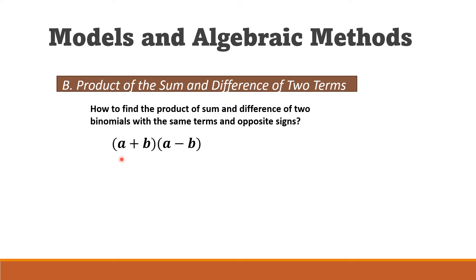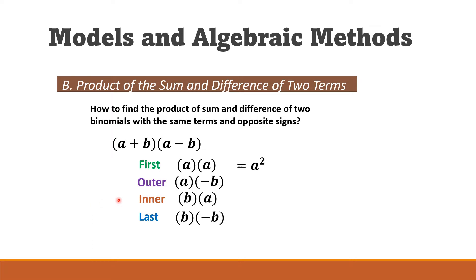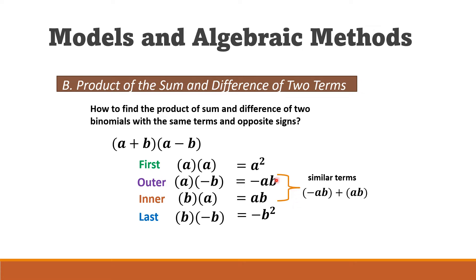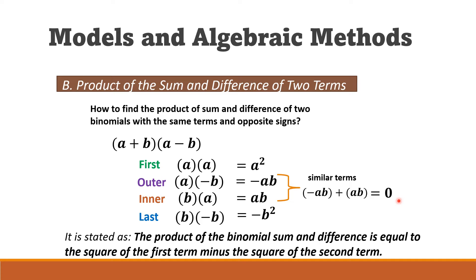For this method, we are given two binomials where the first and second terms are the same, but the operations differ — one is addition and the other is subtraction. Using FOIL: a times a is a squared, a times −b is −ab, b times a is ab, and b times −b is −b squared. The outer and inner terms cancel to zero.